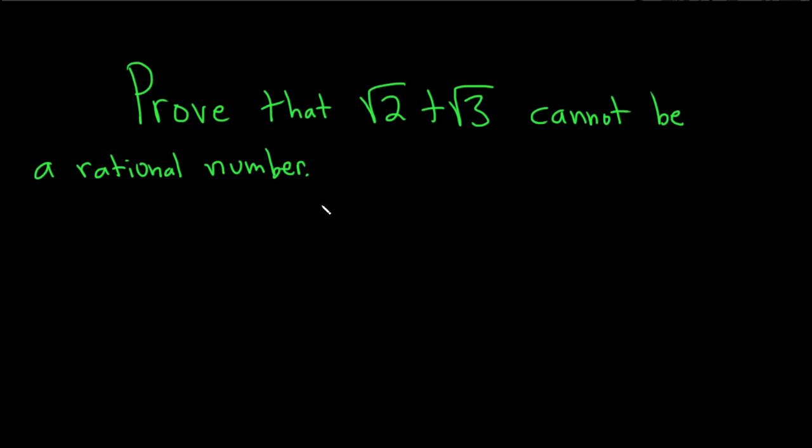Prove that the square root of 2 plus the square root of 3 cannot be a rational number. Let's go ahead and go through the proof. We're going to do a really nice proof.